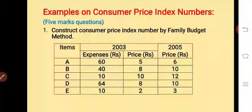In the last class, we solved examples on consumer price index number. Today, we will solve the remaining examples on consumer price index number. Today's first question is: construct consumer price index number by family budget method. The data given includes 2003 expenses and prices, and 2005 prices.